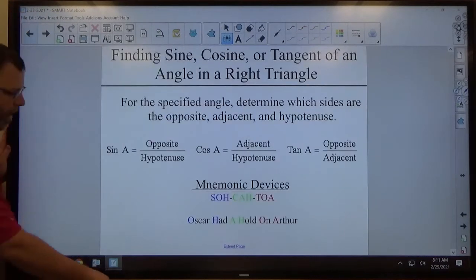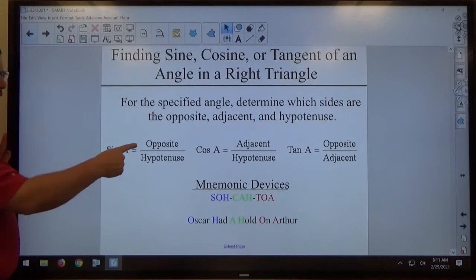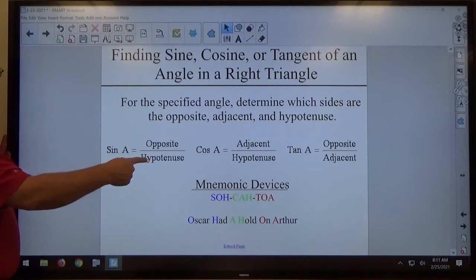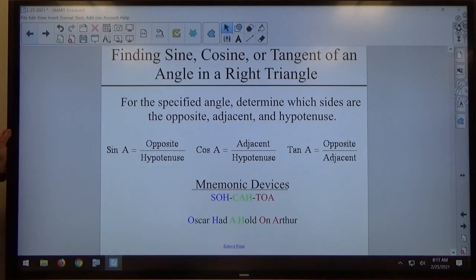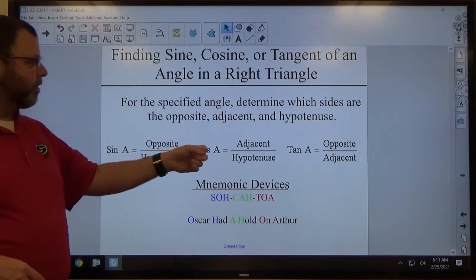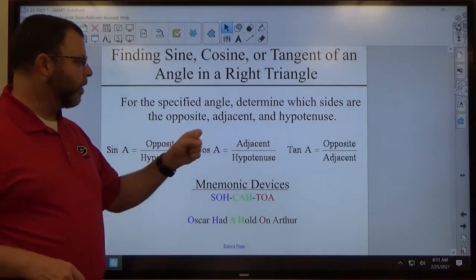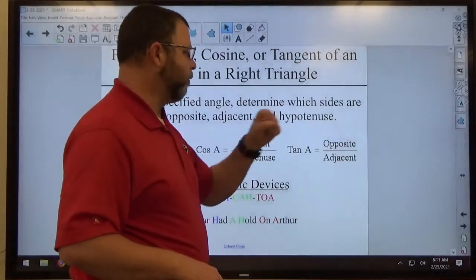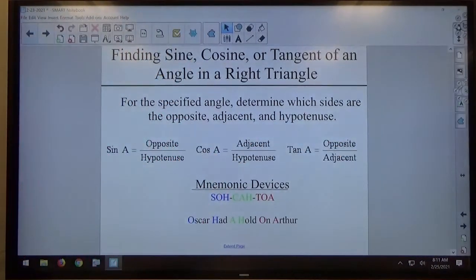So the sine of the angle is simply the opposite measure over the hypotenuse measure, it's just a fraction. Depending on what type of answer you want to get, you could leave it as a fraction, maybe make it a decimal, whatever. Cosine is defined as adjacent over hypotenuse, and tangent is defined as opposite over adjacent. And those are definitions, those are just the creations of trigonometry here.